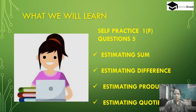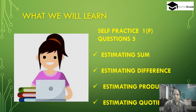Today we will learn and solve self practice exercise questions 1 to 5 of self practice 1F. The chapter name is 'Knowing Our Numbers' and the topics are estimating sums, estimating differences, estimating products, and estimating quotients.